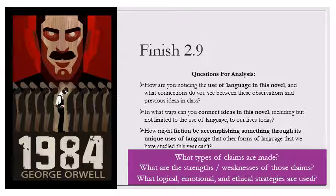A party member is expected to have no private emotions and no respites from enthusiasm. He is supposed to live in a continuous frenzy of hatred of foreign enemies and internal traitors, triumph over victories and self-abasement before the power and wisdom of the party. The discontents produced by his bare, unsatisfying life are deliberately turned outwards and dissipated by such devices as the two minutes hate. The first and simplest stage in discipline is called, in Newspeak, Crime Stop. Crime Stop means the faculty of stopping short, as though by instinct, at the threshold of any dangerous thought. It includes the power of not grasping analogies, of failing to perceive logical errors, of misunderstanding the simplest arguments if they are inimical to Ingsoc.